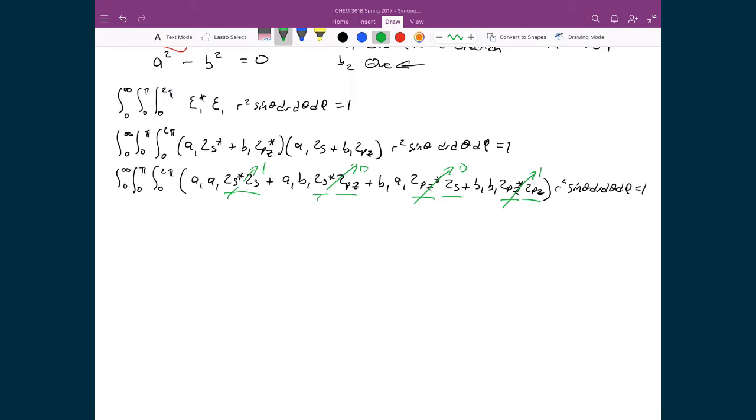That means that's going to be equal to 1, which means that the result of this integral is A1 squared plus B1 squared is equal to 1. Now recall that we just found out when we did the orthogonality expression above that we said that A1 is equal to B1. We saw that all four terms are going to be equal to the same.